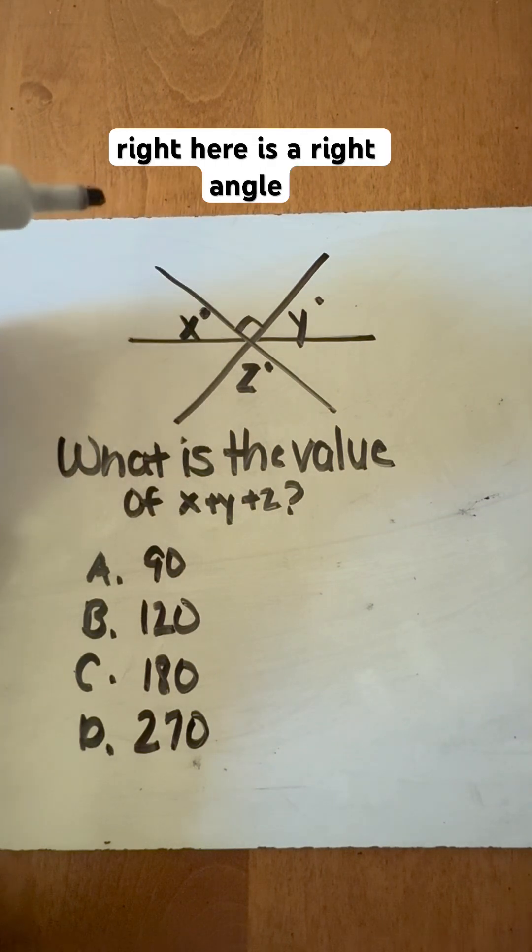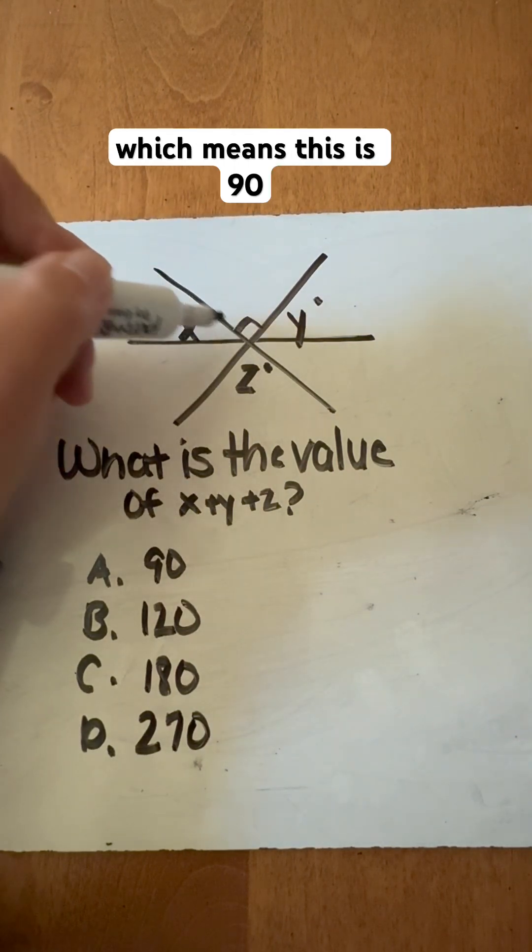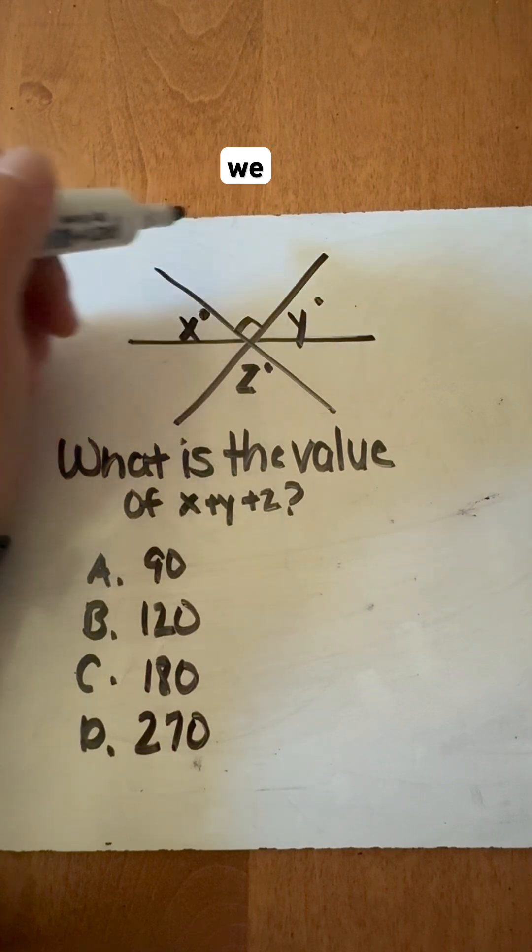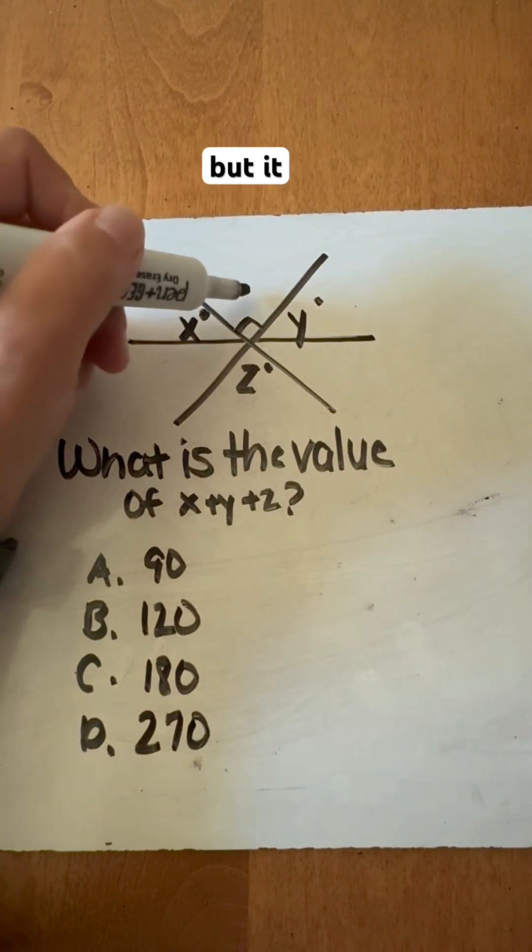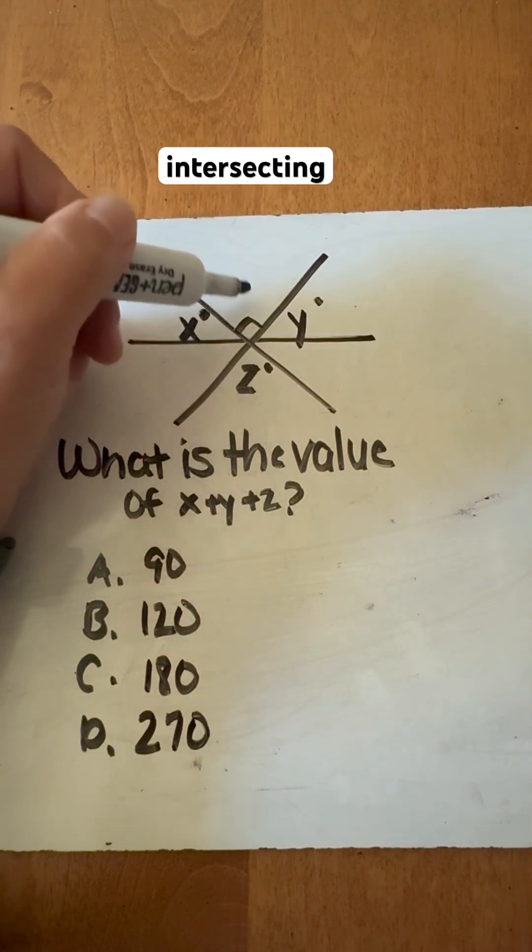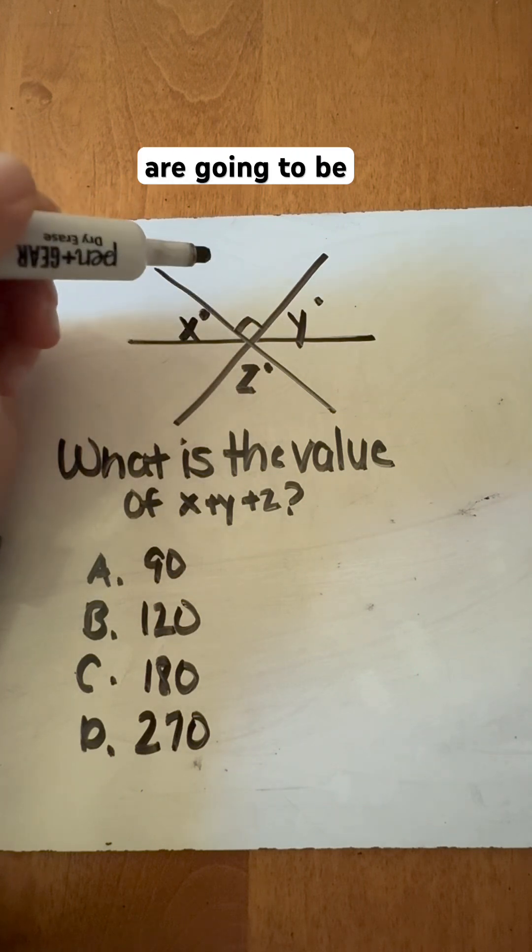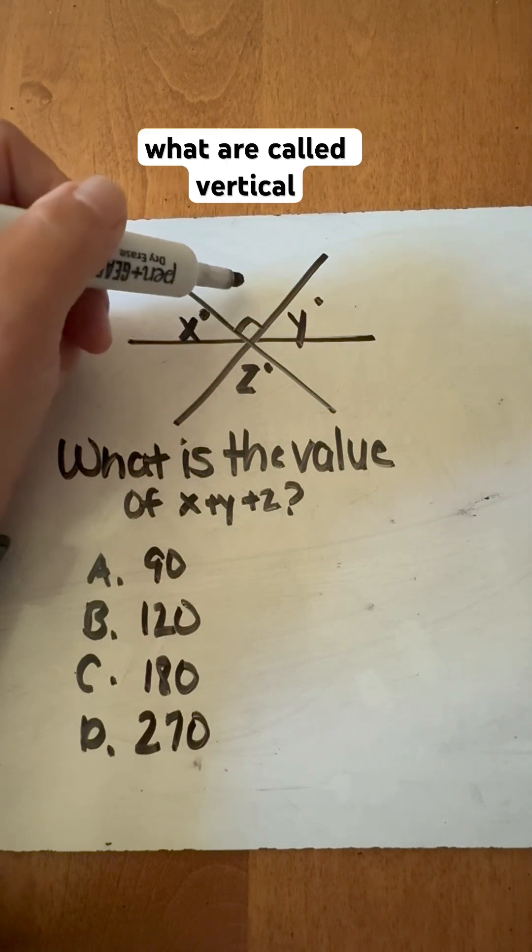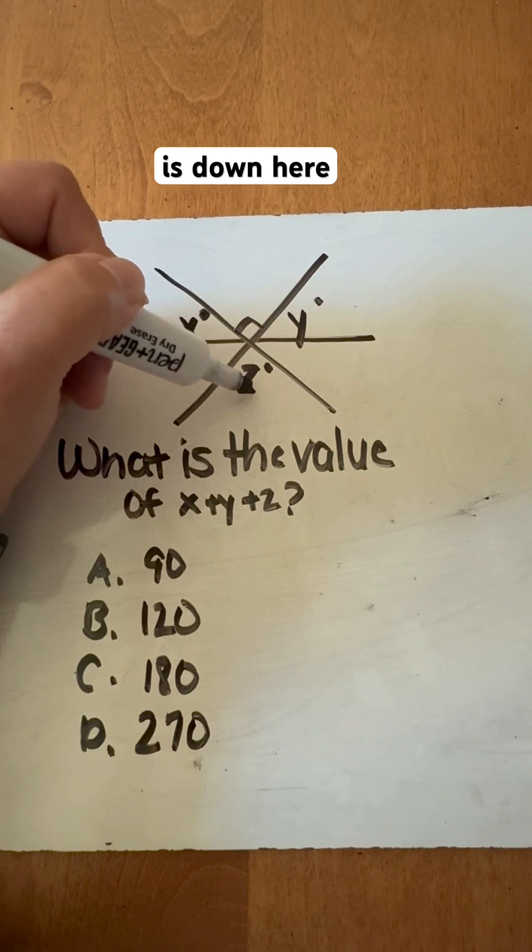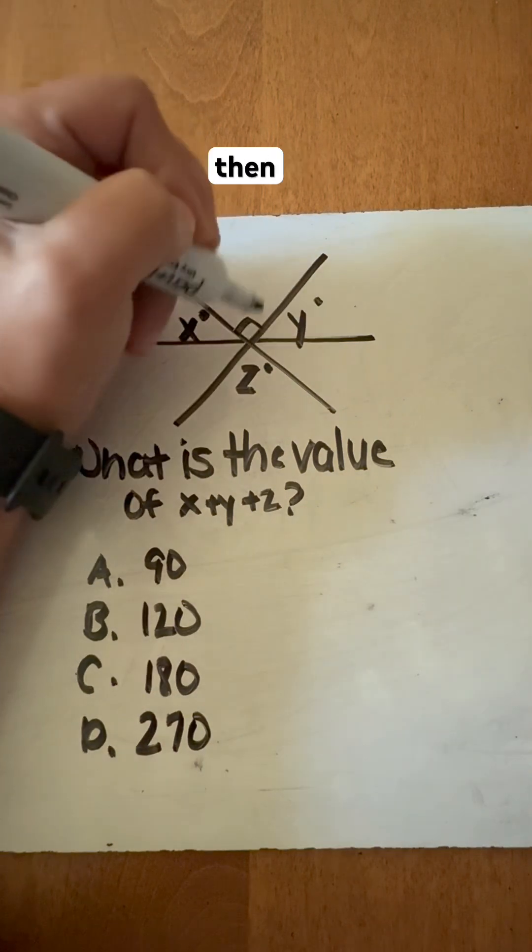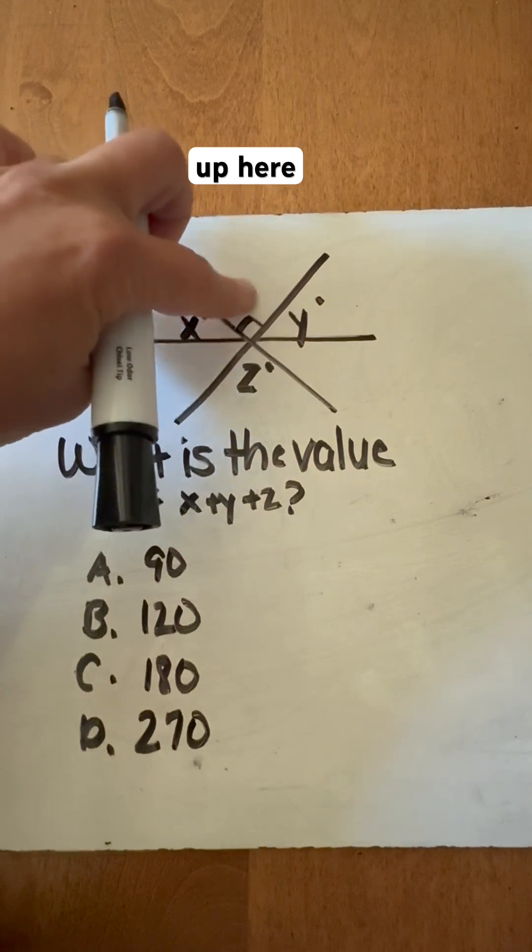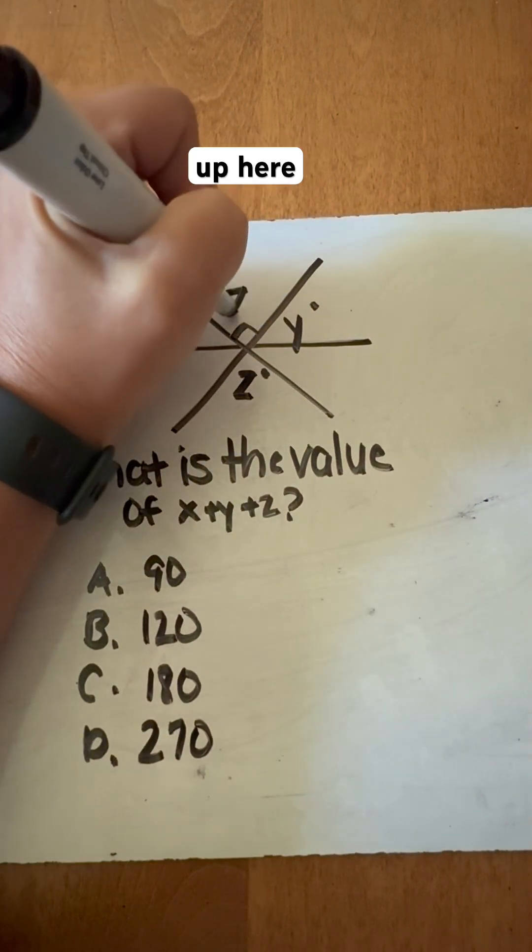Now, we know this angle right here is a right angle, which means this is 90 degrees. We could use that to our benefit, but it also has opposite intersecting lines with opposite angles that are called vertical angles. So if z is down here, whatever that may be, then its opposite angle is up here, which means z would be up here.